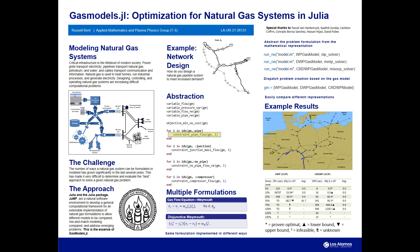Considering an example here, let's look at the network design problem. This is where you're looking to design a natural gas system to meet either new or existing demand. There are multiple ways to formulate this problem. In particular, there are multiple ways you can formulate the physics — this is basically what governs how much flow actually travels down a particular pipeline.